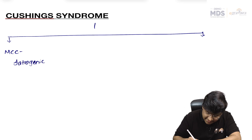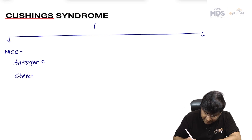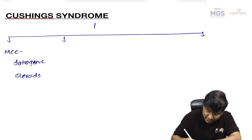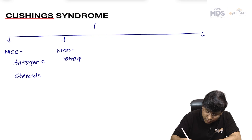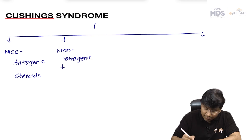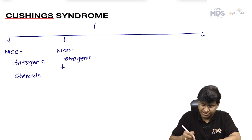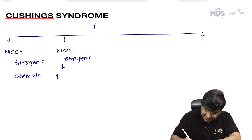After iatrogenic steroid supplementation, what is the most common cause of non-iatrogenic Cushing's? The most common cause of non-iatrogenic Cushing's is pituitary adenoma.